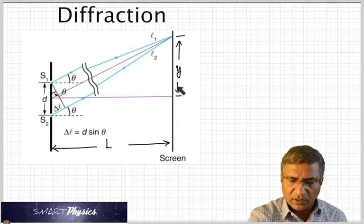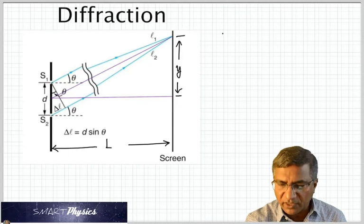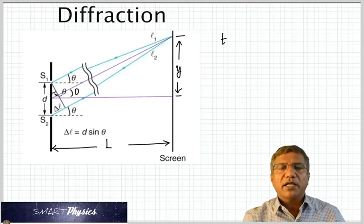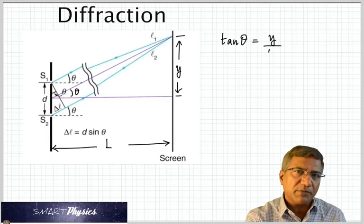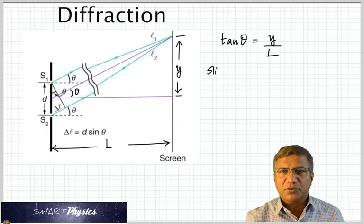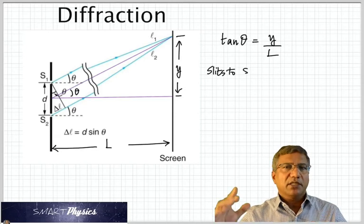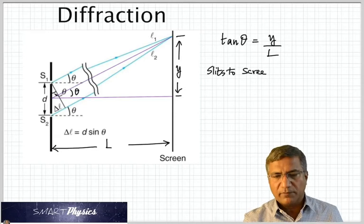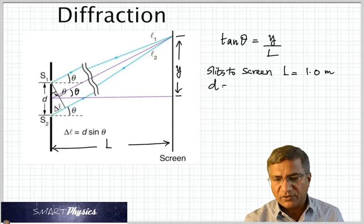If you take tan theta, tan theta is opposite side by adjacent side. So tan theta would become Y by L. So that's another thing that can come in. Because sometimes in problems, you'll be given the distance between the slits and the screen. And you'll be asked to find Y. So that's when you use this additional formula after you get theta.